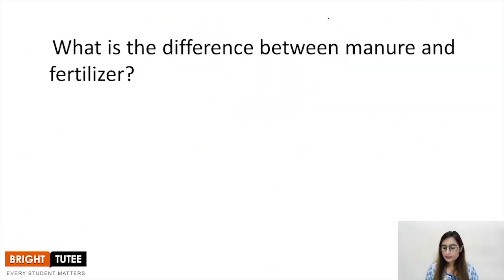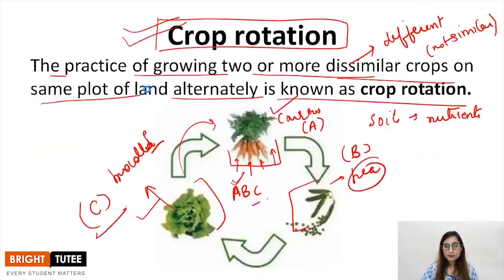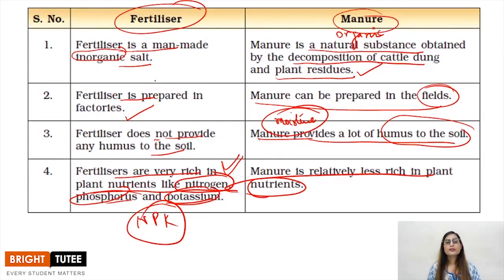Next important question is, this can easily be in your exam and it is a three mark question. What is the difference between manure and fertilizer? Let's look at this because you require a good answer. Firstly, fertilizer is man-made while manure is organic and natural substance obtained by decomposition of cattle dung and plant residues. Fertilizer is prepared in factories while manure is prepared in fields.